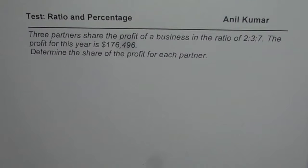Three partners share the profit of a business in the ratio of 2 to 3 to 7. The profit of this year is $176,496. Determine the share of the profit for each partner. So, you can pause the video, answer this question and then check with my solution.